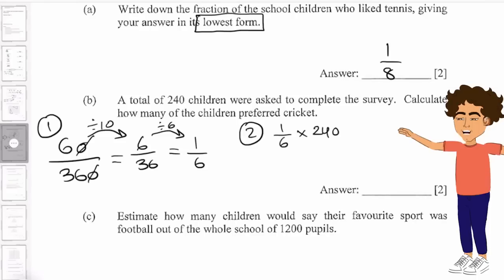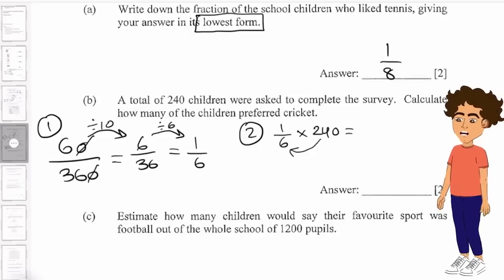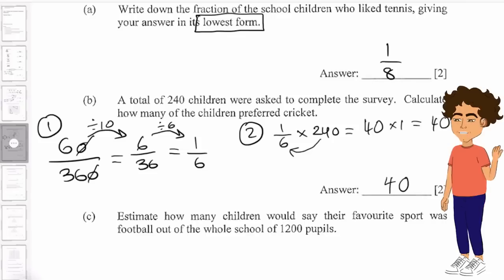Now for my step two, let's have 1 over 6 times 240. And if you remember my two-step method, you divide by the denominator, and then times by the numerator. So 240 divided by 6 gives us 40. And if you times it by the numerator, it remains as 40. And that is our answer.